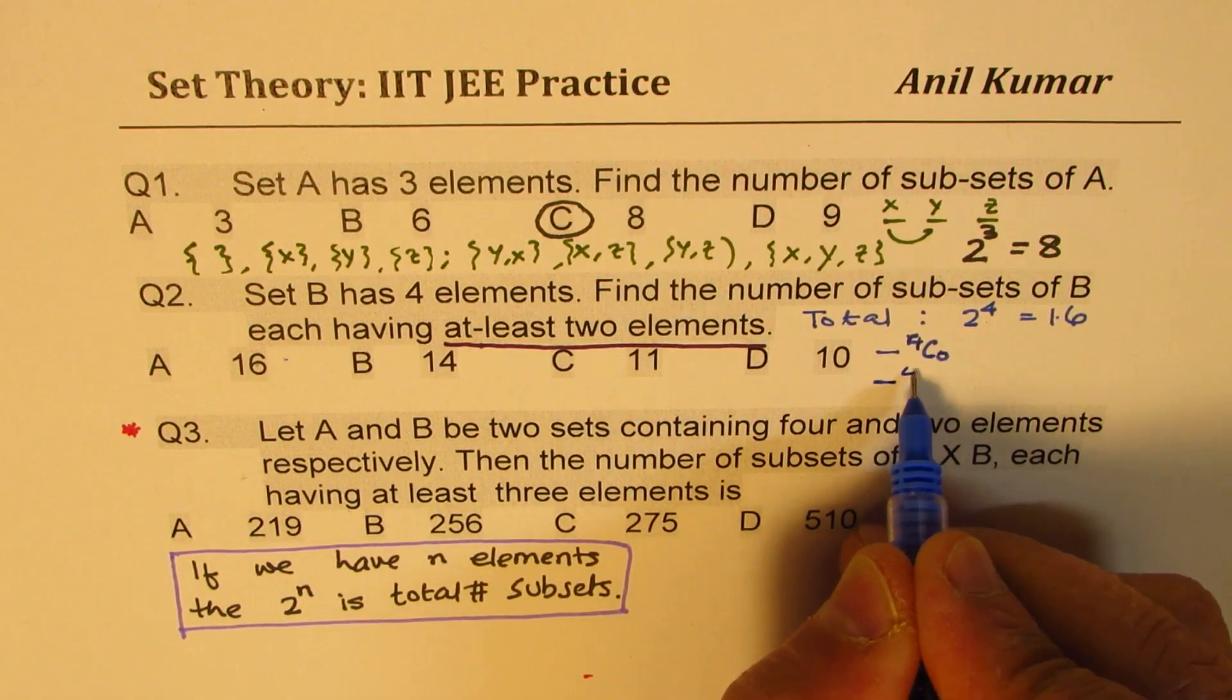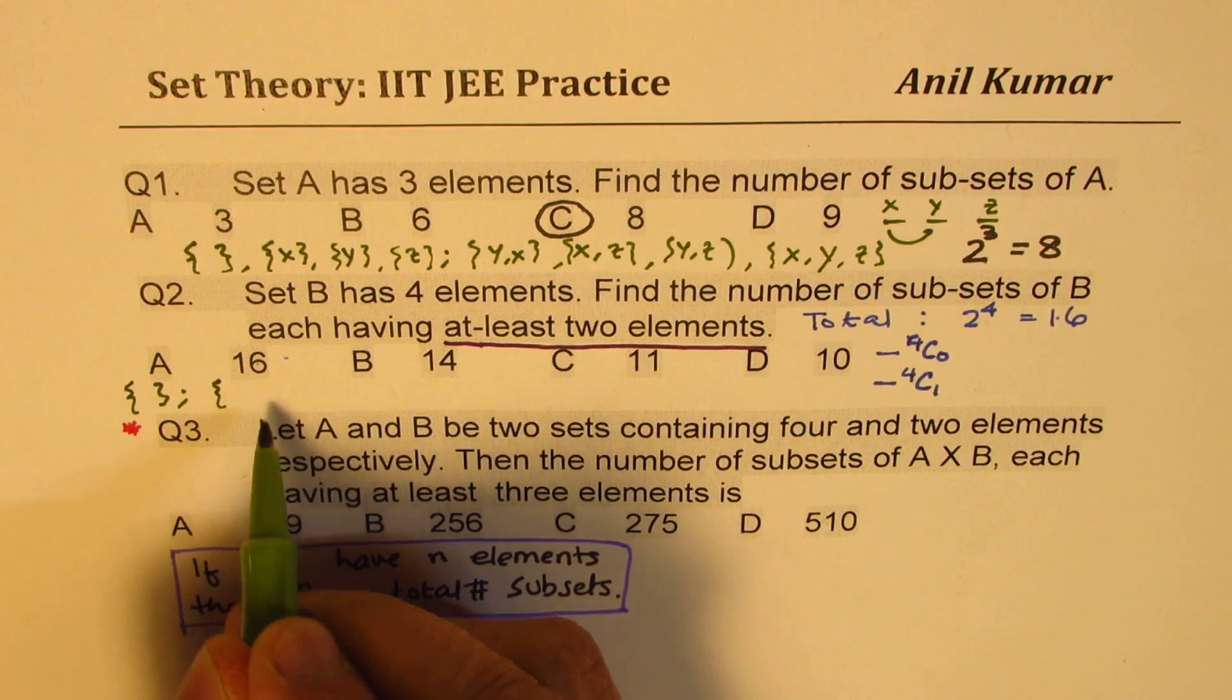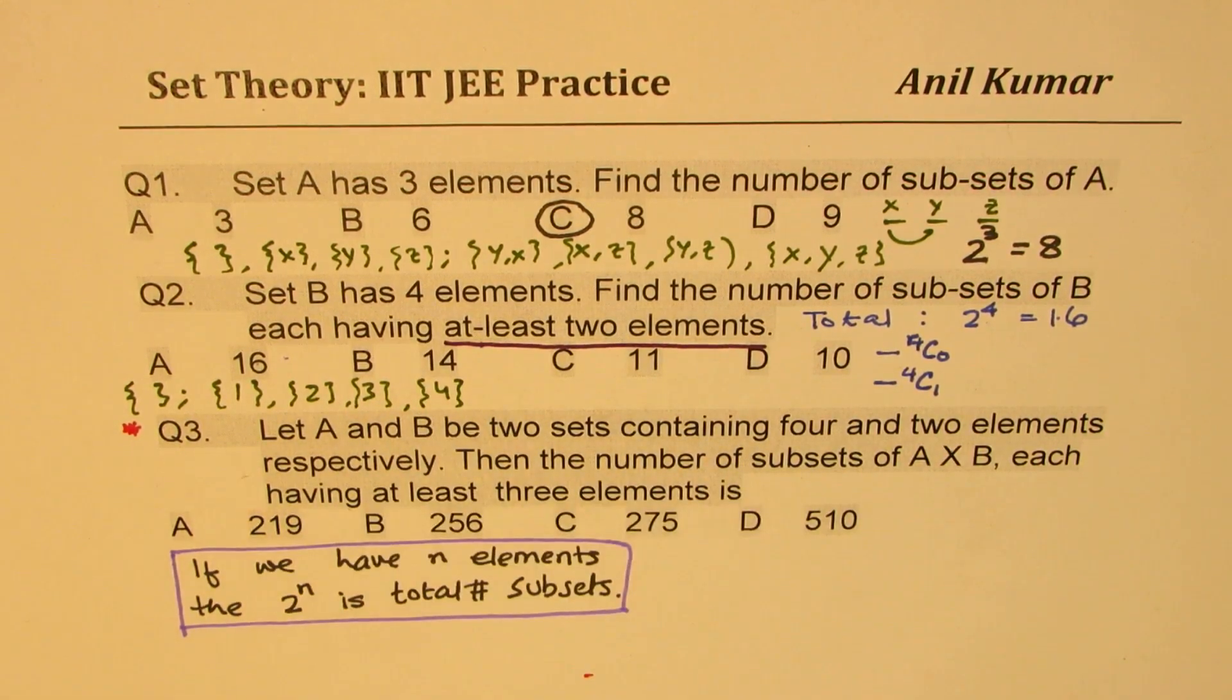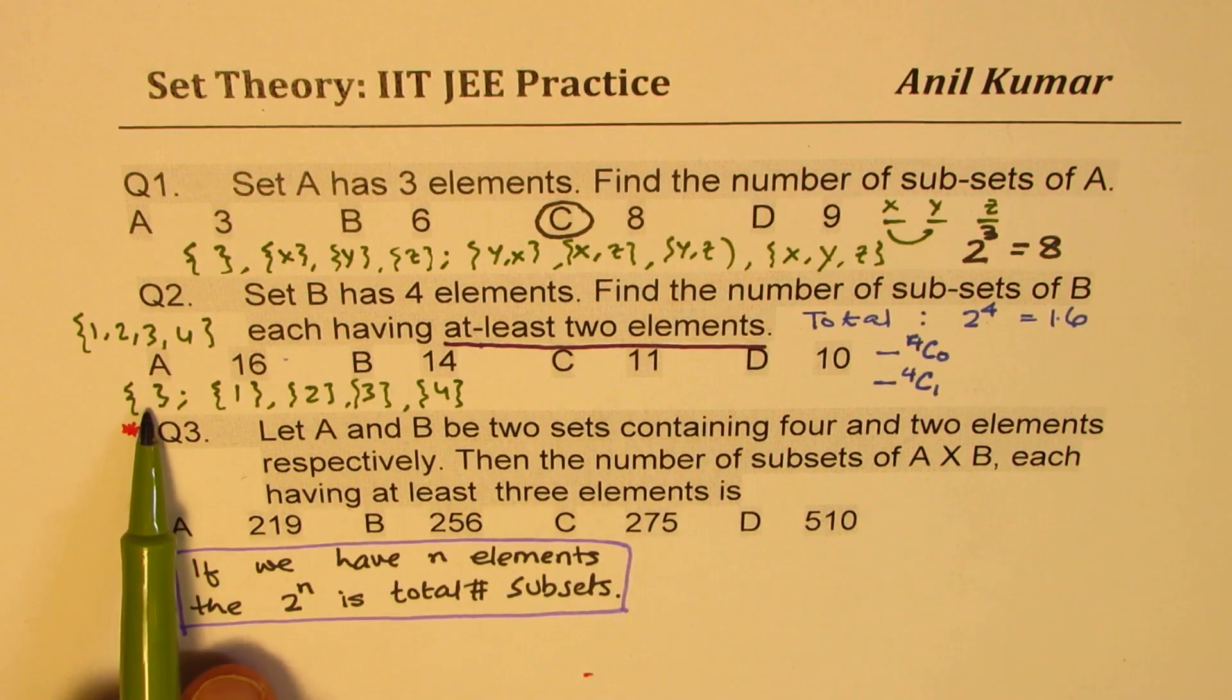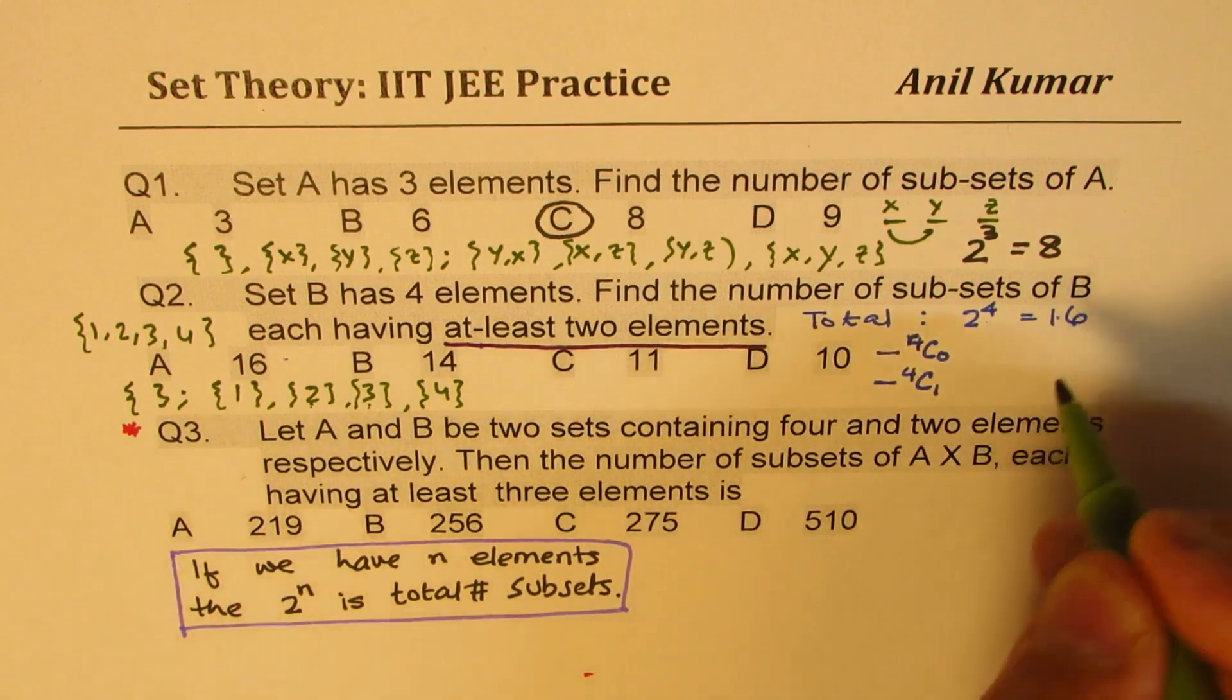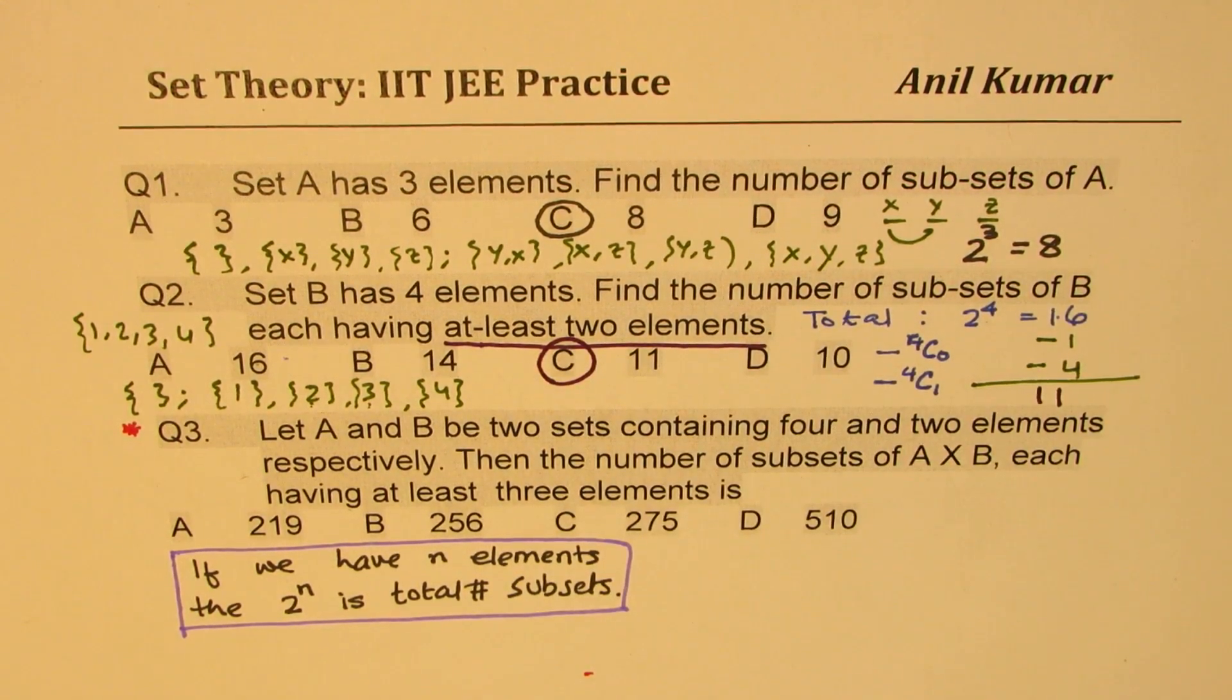And we also do not want those which have only one element. So that means we do not want one which is empty set, and we do not want one which has either, let's say, one, two, three, and four. You get my point. We are just assuming that the four elements are the numbers one, two, three, and four. So we do not want null set and we do not want the sets which have only one element, which could also be written as 4C1, null set as 4C0. So we have to take away one and we have to take away these four. So when you take away five from 16, what are you left with? We are left with 11, and therefore option C is the right option.